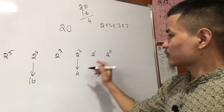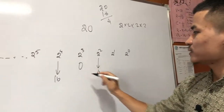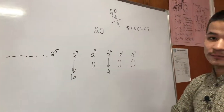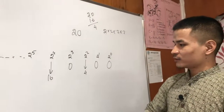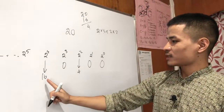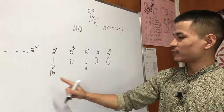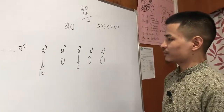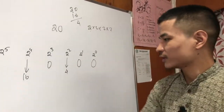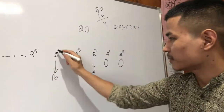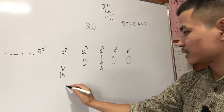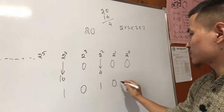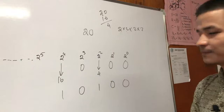So the power 5 is now. Here is 0, 0, 0. So here is the binary number: here is 1, 0, 1, 0, 0.